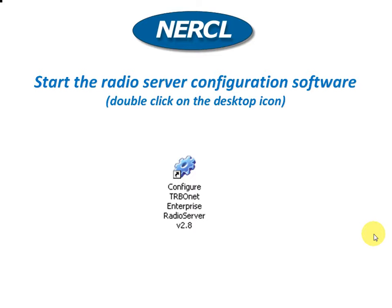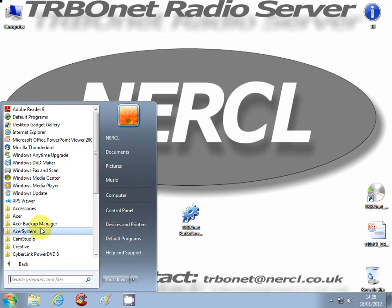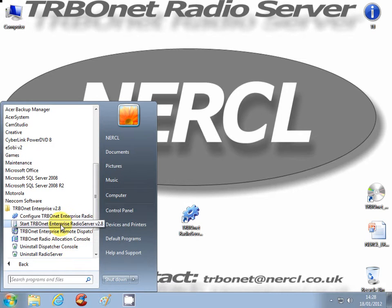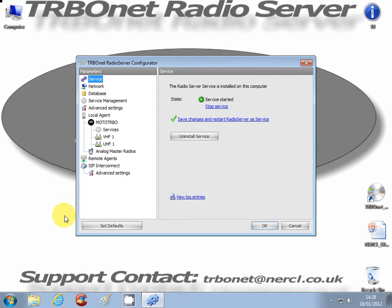The assumption is made that you have the Turbonet Enterprise radio server installed onto the server PC along with Microsoft SQL Server Express. To initiate the configurator for the radio server software, locate the icon on your desktop or alternatively navigate through the new comp software option.